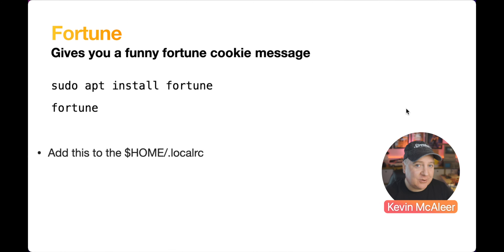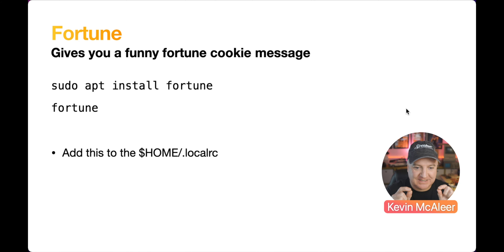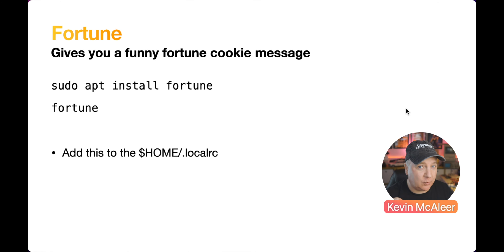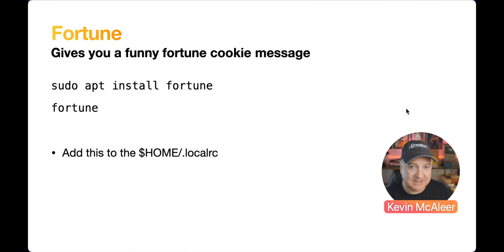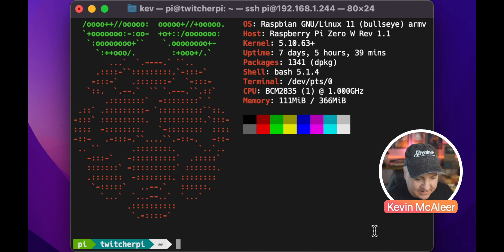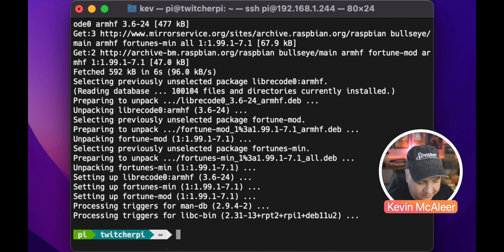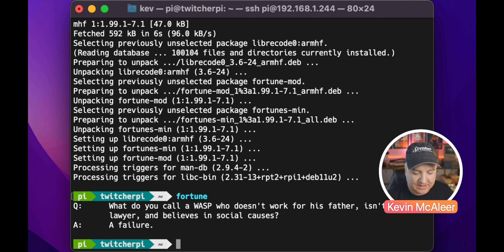Another really cool program I discovered on FreeBSD is called Fortune — it's like a fortune cookie, one of those little messages. To install it: sudo apt install fortune. Then simply type 'fortune' to get a message. We can add that to our login to get a nice fortune cookie message, but we're going to do something even cooler first. Let's go and install it: sudo apt install fortune.